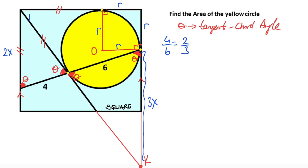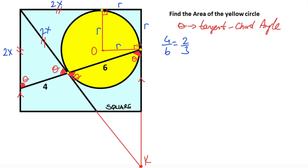We know these three parts are equal, so these are two x. A square has four equal sides, so if this side equals x plus r, that means two x is left here. So x units are left here. We also know this triangle is an isoceles triangle, which means this side must be equal to three x.